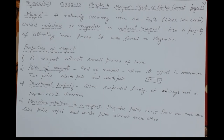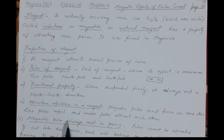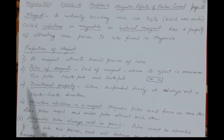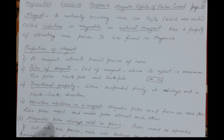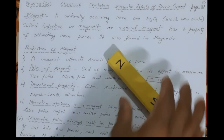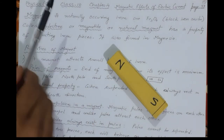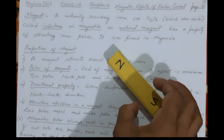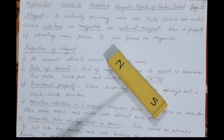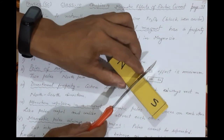The fifth property is that magnetic poles always exist in pairs. A magnet must always have both a north pole and a south pole together — you cannot have a magnet with only a north pole or only a south pole. The poles cannot be separated. If you cut a magnet into two pieces, each new piece will again have its own north pole and south pole.